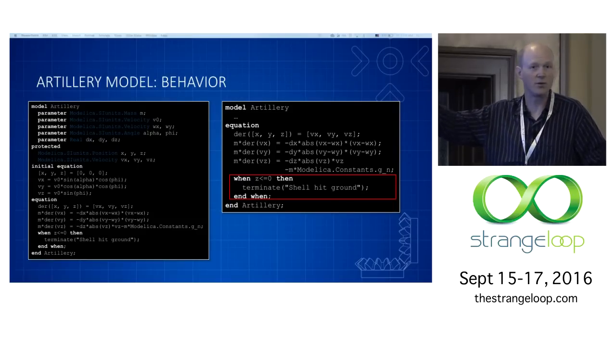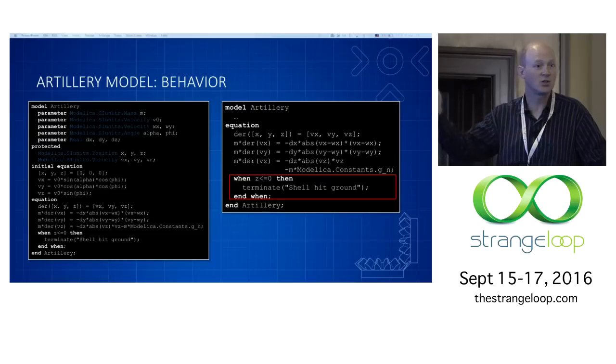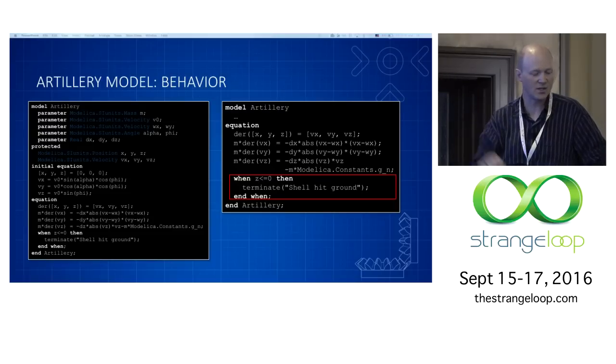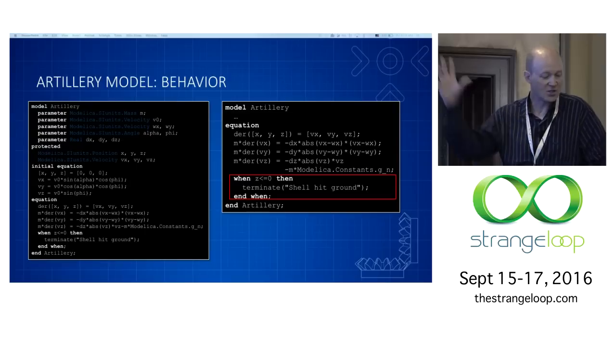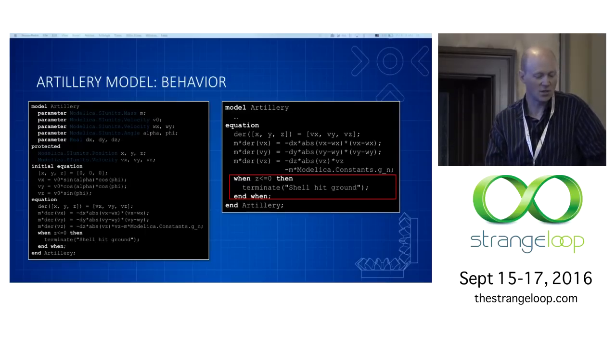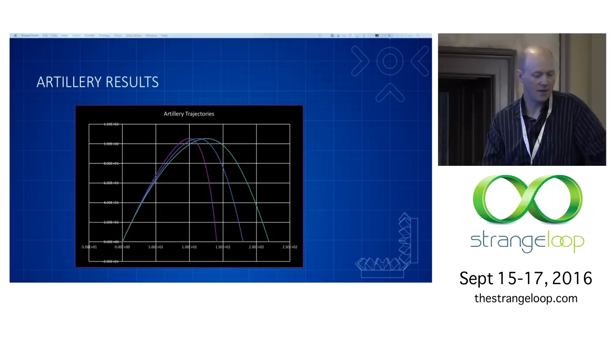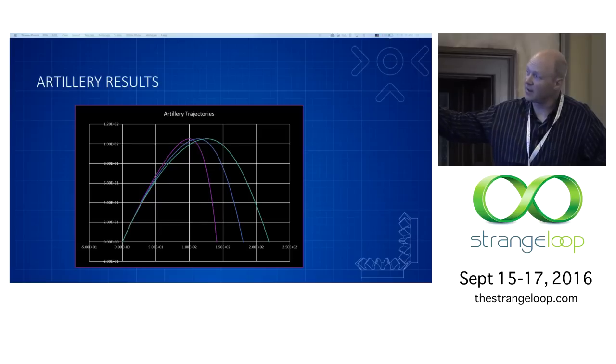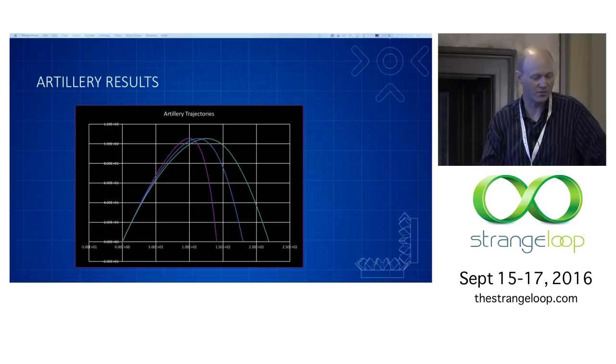So that's just an example of a Modelica model to give you a concrete sense of what Modelica looks like and is. If you take that model and then you simulate it, for example, for different headwind values when firing a shell, you'll get a trajectory out of it like this. So that's probably what you'd expect, at least intuitively, qualitatively.